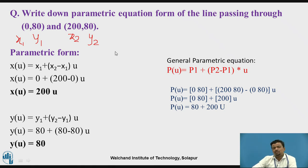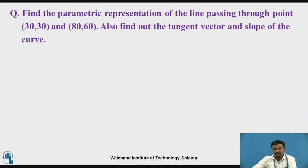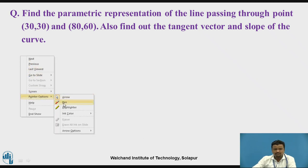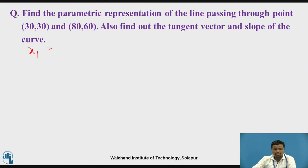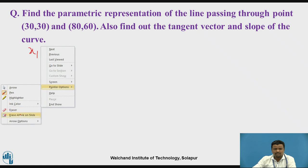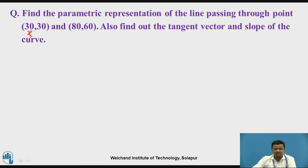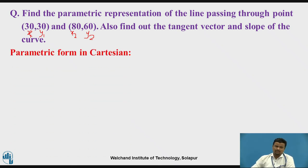The next problem: find the parametric equation of the line passing through x1 = 30, y1 = 30 and x2 = 80, y2 = 60. We also have to find the tangent vector and the slope of the curve. These are the input points.